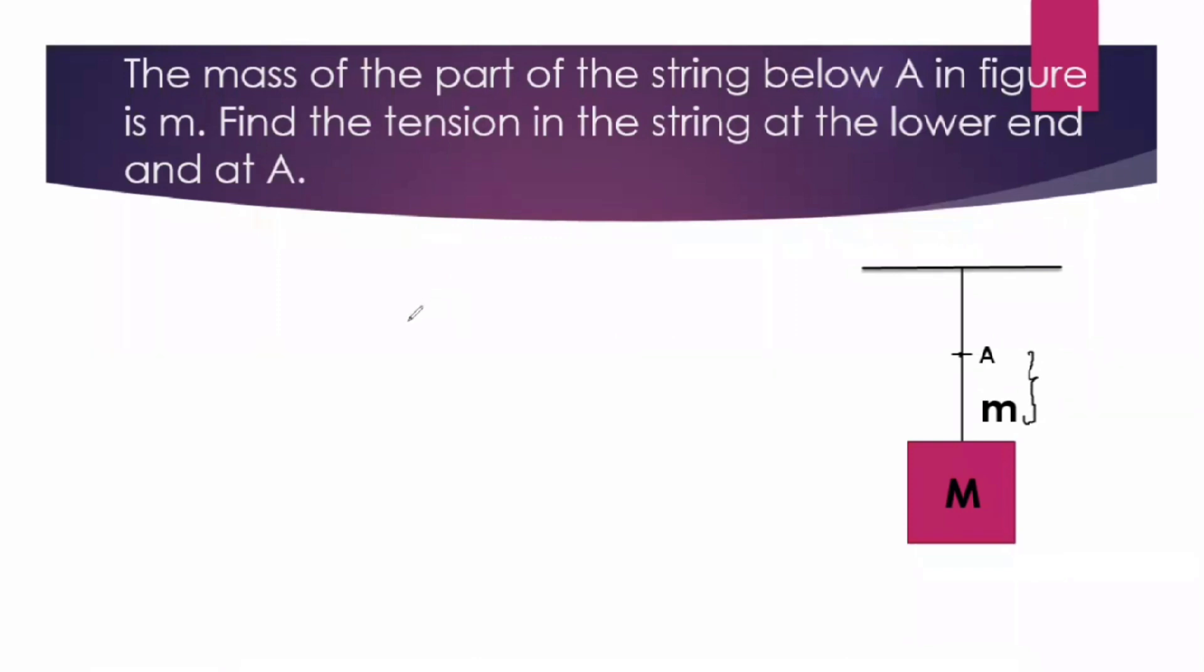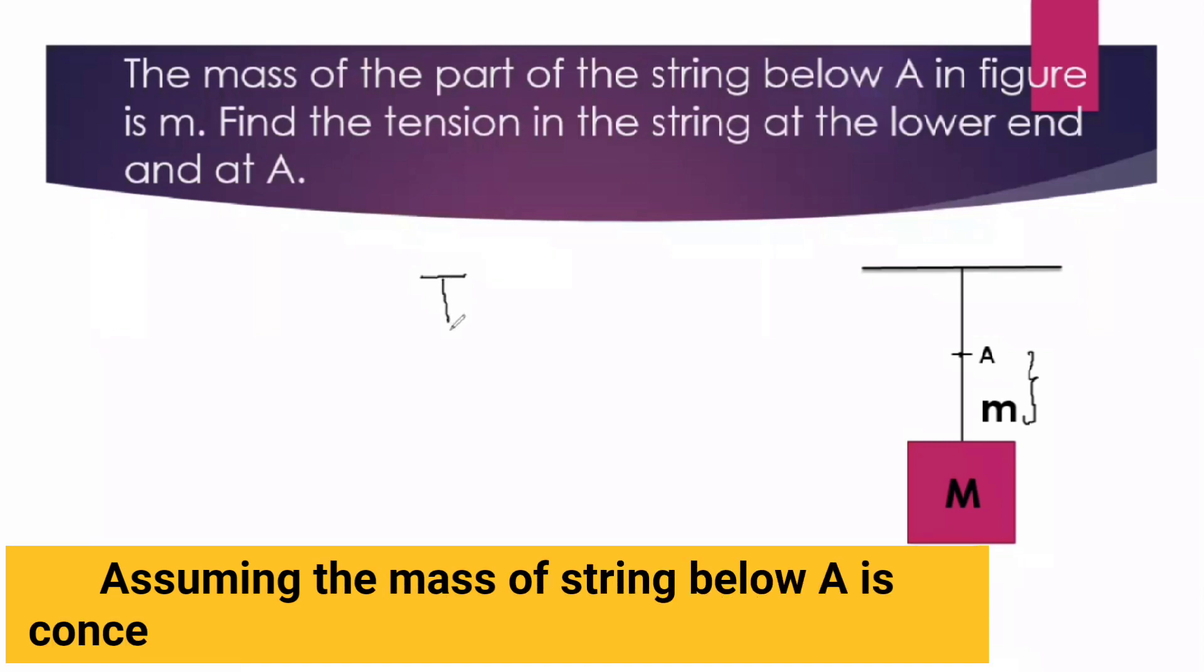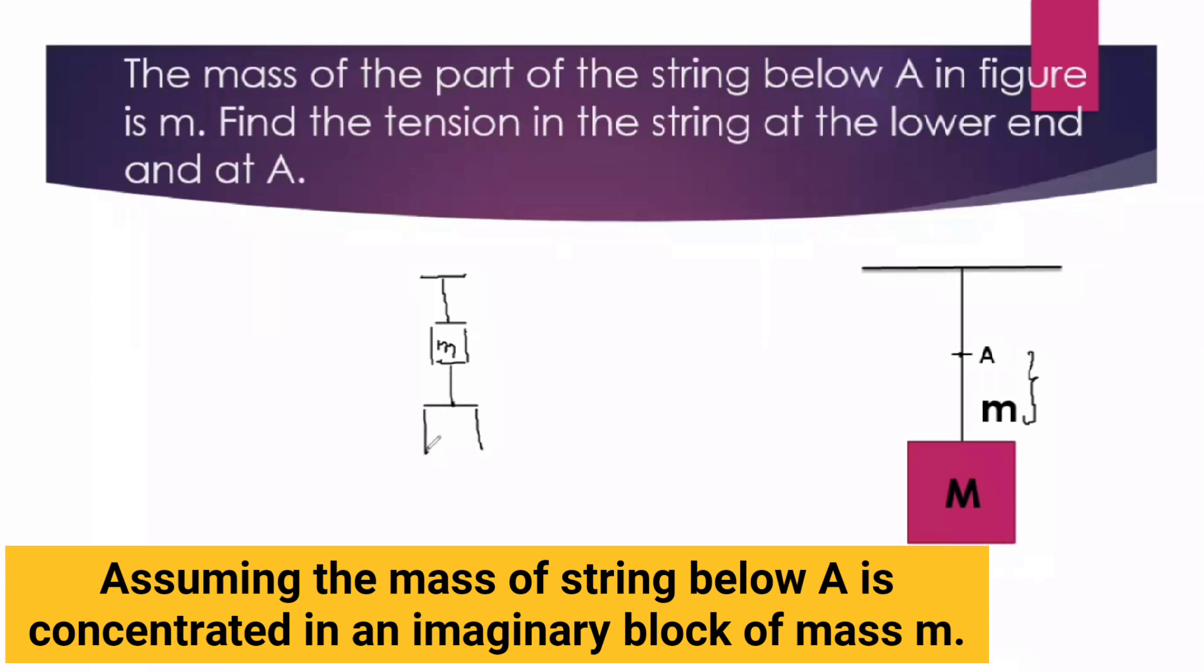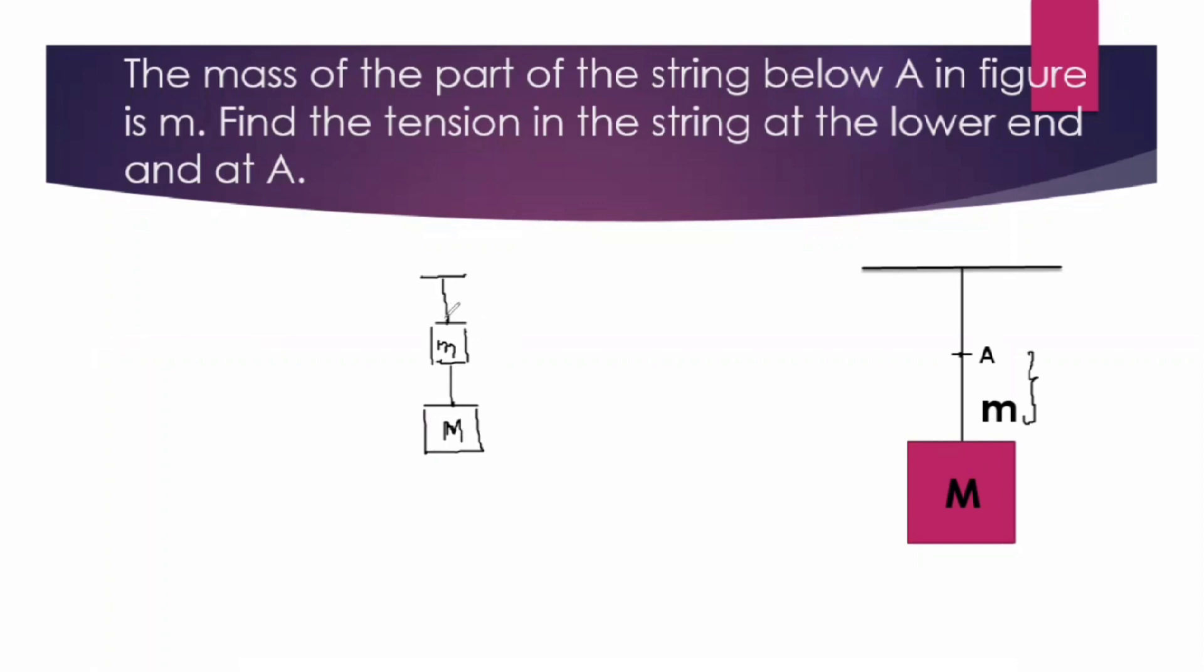So let us consider the system having two blocks. One is a block with mass m which is connected to a block with capital M. So this is point A. Total mass hanging at A is capital M plus small m.